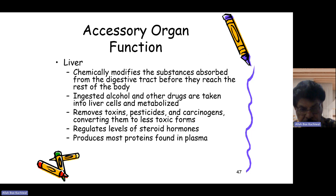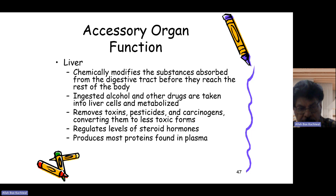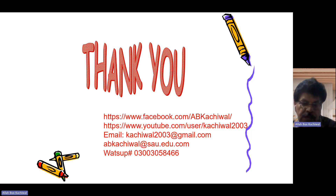The liver chemically modifies substances absorbed from the digestive tract before they are released into the body. Ingested alcohol and other drugs are taken into liver cells and metabolized, removing toxins, pesticides, and carcinogens by converting them into less toxic forms. The liver also regulates hormone levels and performs the important action of detoxification.